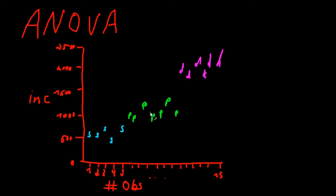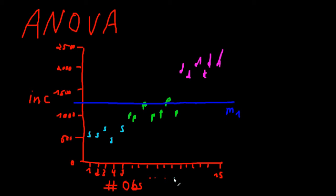How can we make sense of the data if we had no additional information — only the trading companies and their incomes? Well, the only thing we could do is draw the overall mean, which would be right around here — let's call that M. This is the overall mean of all our observations. However, since we know our observations belong to different groups, why not use group-specific means? We calculate the mean for all the Swedish observations, which is right around here.